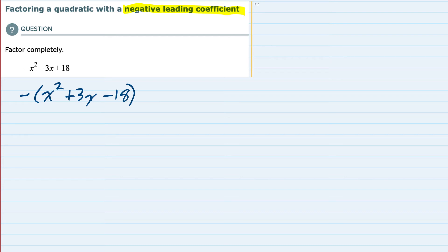Now that I have the negative factored out, I can continue to factor the quadratic, and I just need to make sure that I'm left with that negative still outside, just so that I don't lose it.